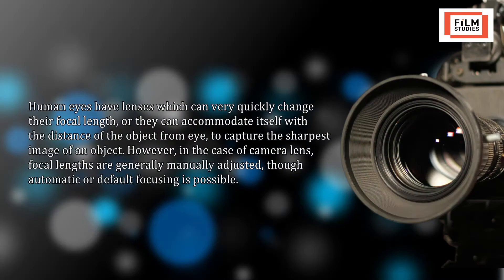The photographic or cinematographic camera is known as the 'mechanical eye,' which has many advantages and shortcomings compared with the human biological eye. However, the basic structure of both the camera and the human eye remains similar — both are extremely light sensitive. Human eyes have the endless property of quickly changing their focal length, accommodating the distance of objects to capture the sharpest image.